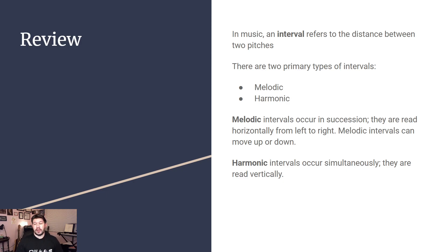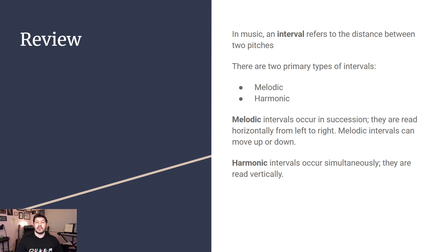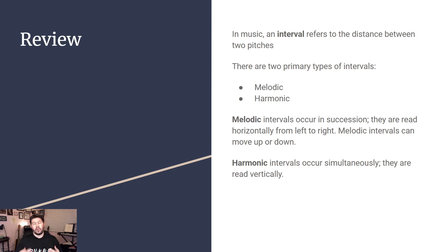Harmonic intervals on the other hand are going to occur simultaneously, meaning that they are going to be read vertically — they are happening at the same time. So that's when you're playing multiple notes on the keyboard and saying that we are using a third, or a fifth, or a seventh, things like that.